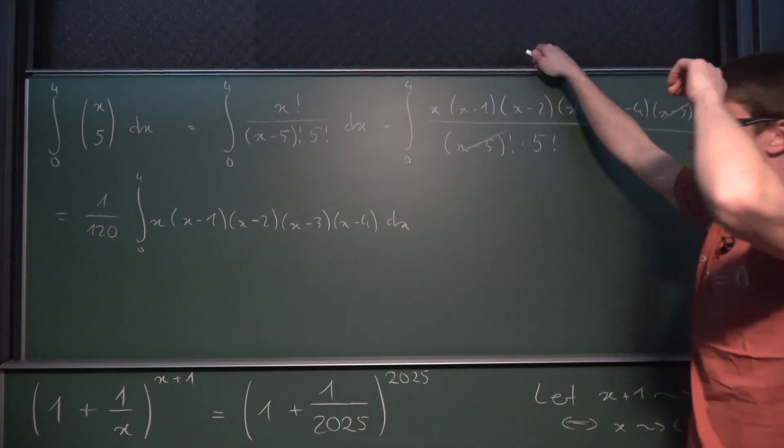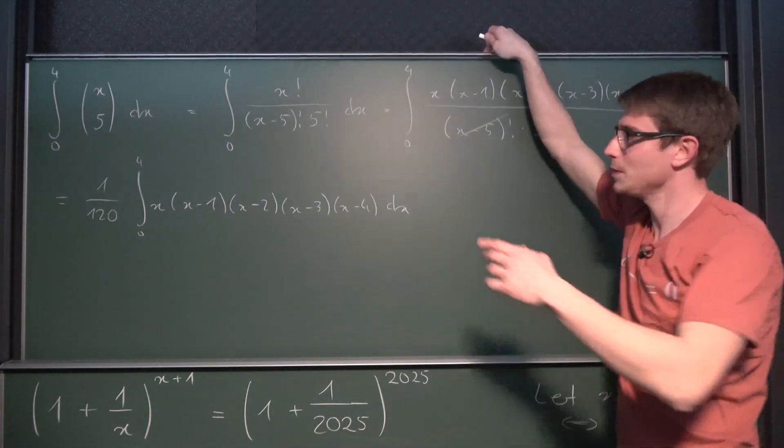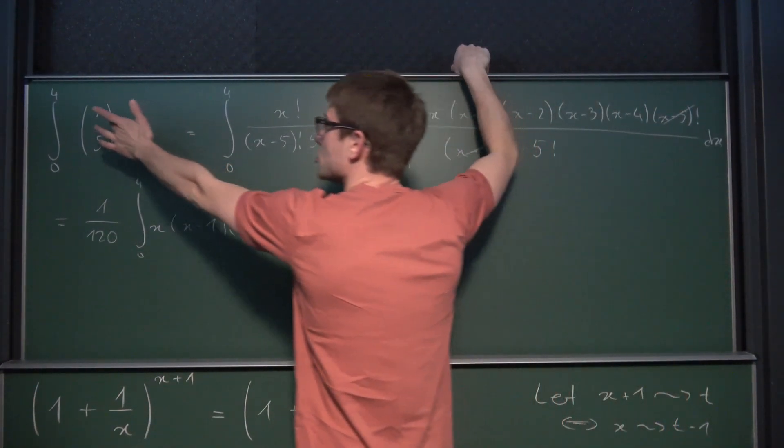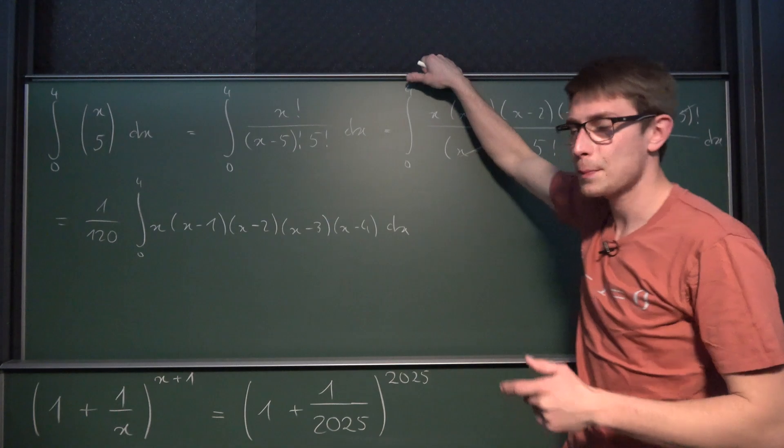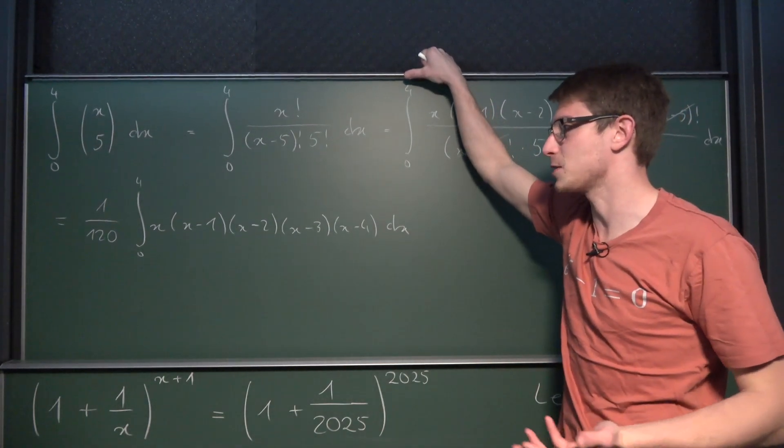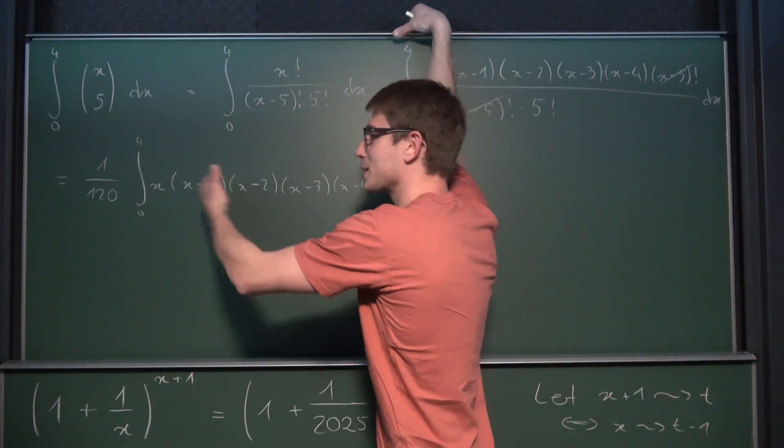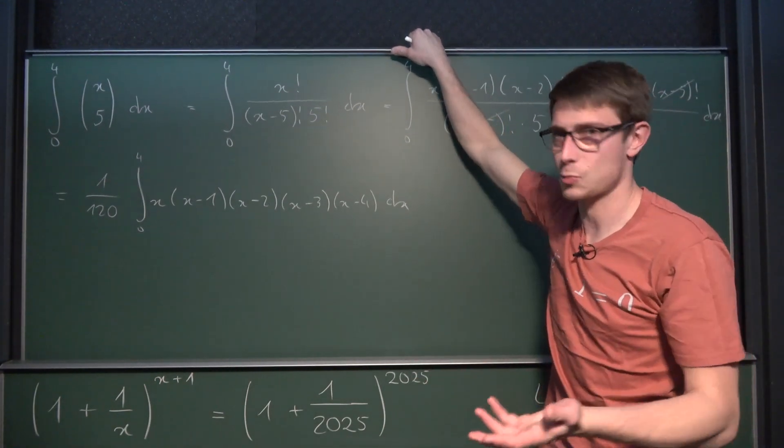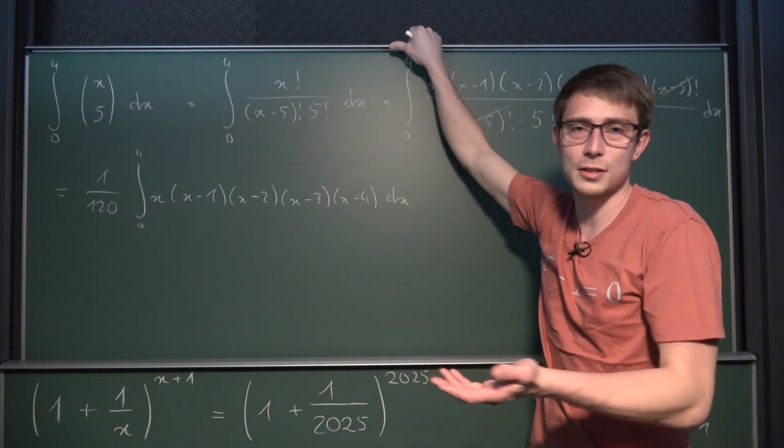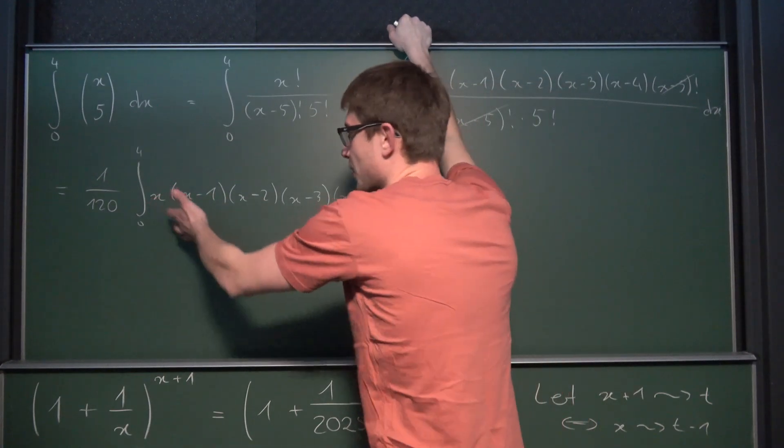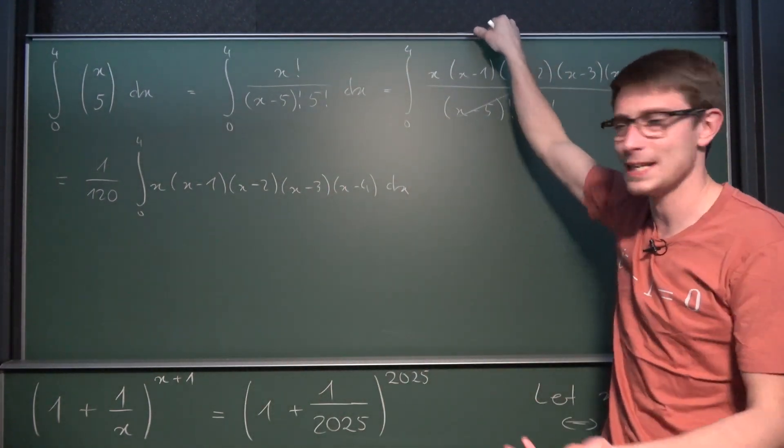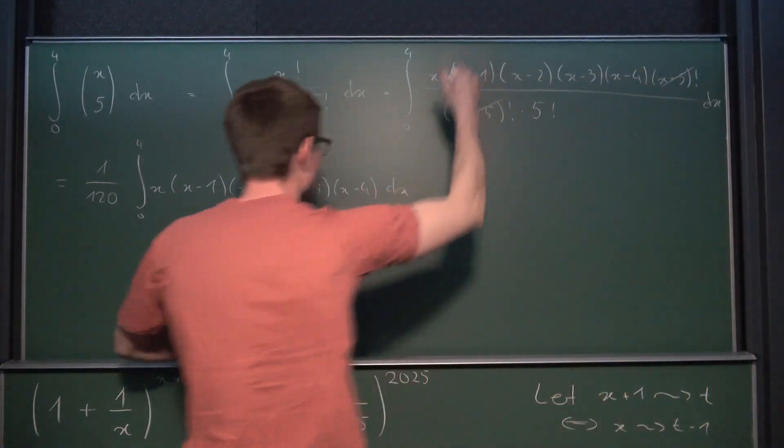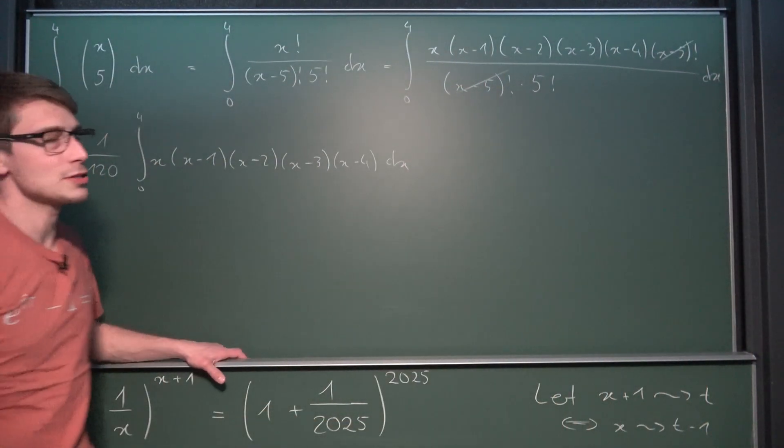This might seem like a mess and this problem in and of itself is not difficult. But I have chosen x choose 5 because we can introduce a very clever substitution to basically make all of this collapse in and of itself. I really like this approach. You could quite possibly just multiply everything out, get a polynomial and just plug all the numbers in. But that wouldn't be cool and also not very quick and also extremely boring.